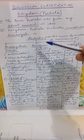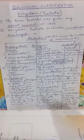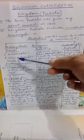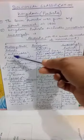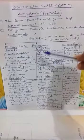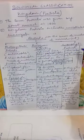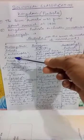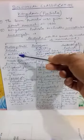Kingdom Protista is divided into three categories on the basis of mode of nourishment. The first category is photosynthetic protists, the second is protozoan protists, and the third is saprophytic protists.